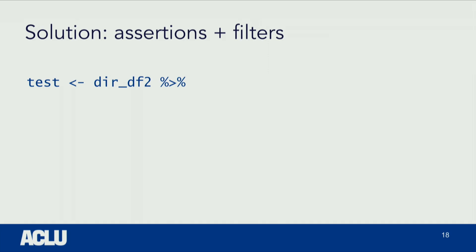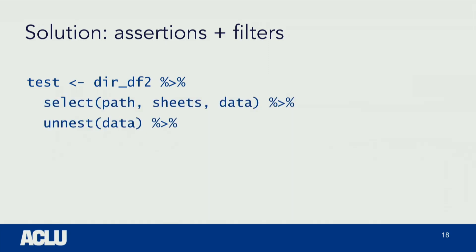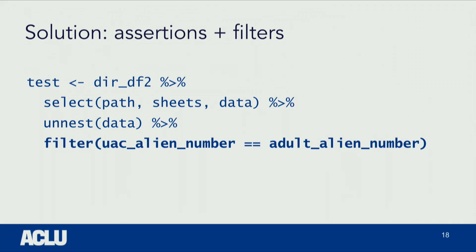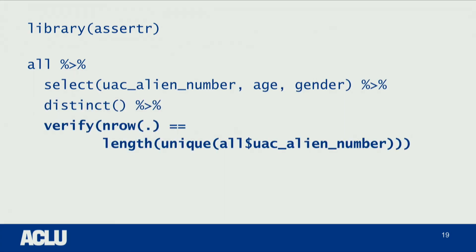There's nothing we can do from a data perspective once we get to this point — we have to turn around and ask, what is going on with these 22 rows? It's really important whether they were actually reunified with their parent but the identification number was entered wrong, or if they're still somewhere else. We did this with a series of assertions and filters. We can un-nest the data to have one row for every row of information, filter to find rows where the child's alien number was the same as the adult's alien number, look at what that path is, and return to that source to figure out what's going on. We can also put verifications and assertions right into a tidyverse-style pipe to make sure, for example, that all children only have one age and one gender associated with them, so we're not double counting anyone.